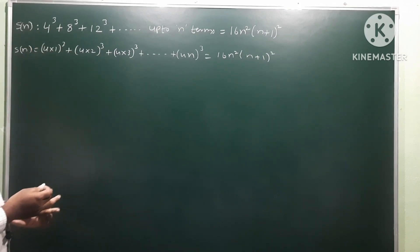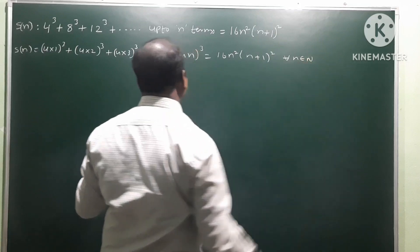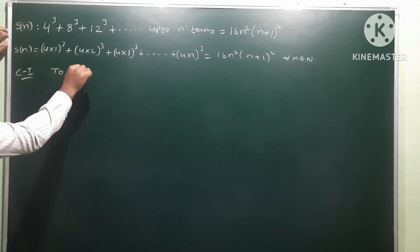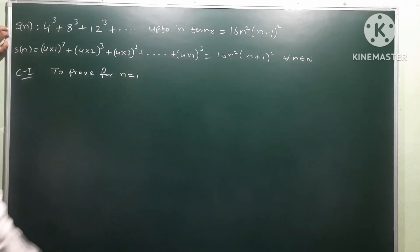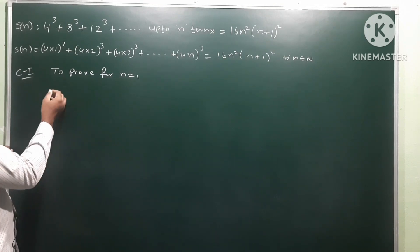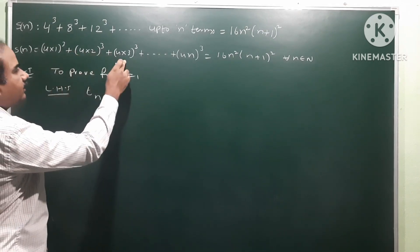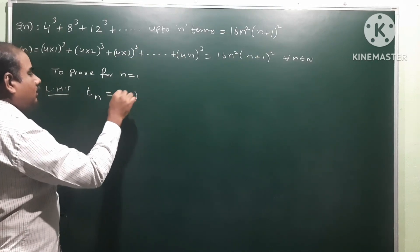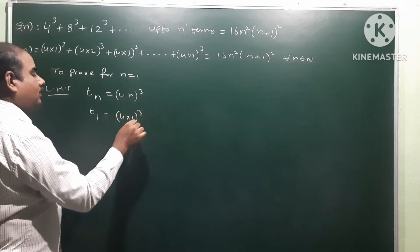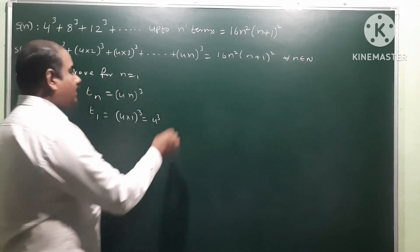We need to prove this by mathematical induction for all n belonging to natural numbers, following a three-step procedure. Case 1: prove for n=1. The LHS is the nth term t(n) = (4n)³. Substituting n=1, we get t(1) = (4×1)³ = 4³ = 64.